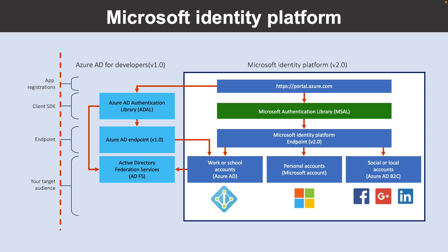Microsoft Identity Platform is an evolution of the Azure AD developer platform. It allows developers to build applications that log in users, get tokens to call APIs such as Microsoft Graph, or APIs that developers have built. It consists of an authentication service, open source libraries, application registration and configuration through a developer portal, and application API with full developer documentation, quick-start samples, code samples, tutorials, and how-to guides.